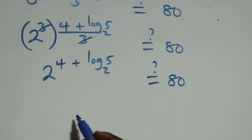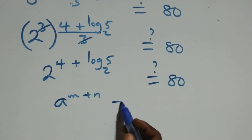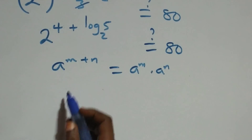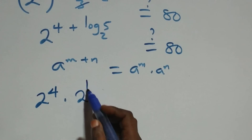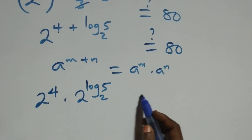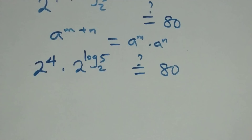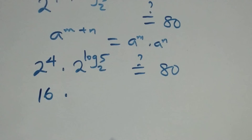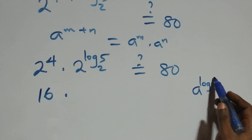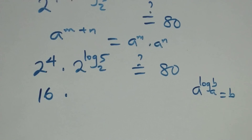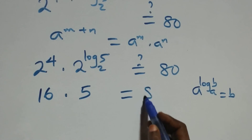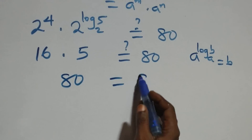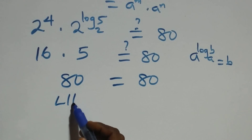Using the law of indices, a raised to power (m + n) equals a^m times a^n, so we have 2⁴ times 2 raised to power log₂5. Now 2⁴ equals 16, and by the logarithm identity a raised to power log_a(b) equals b, 2 raised to log₂5 equals 5. So we get 16 times 5 equals 80, which equals the right-hand side. The left-hand side equals the right-hand side, confirming our answer.